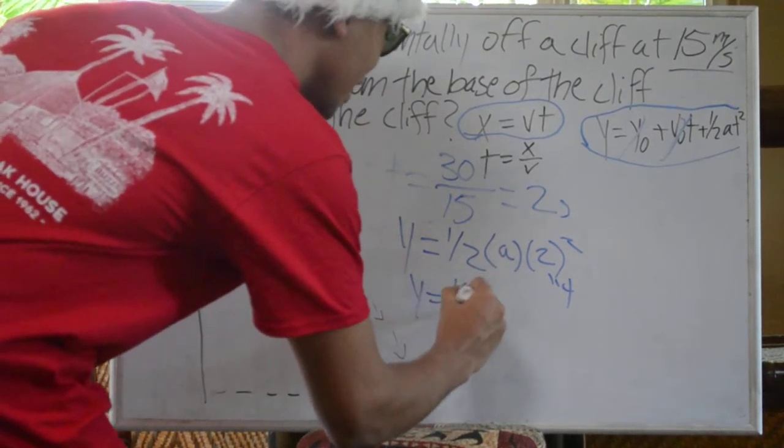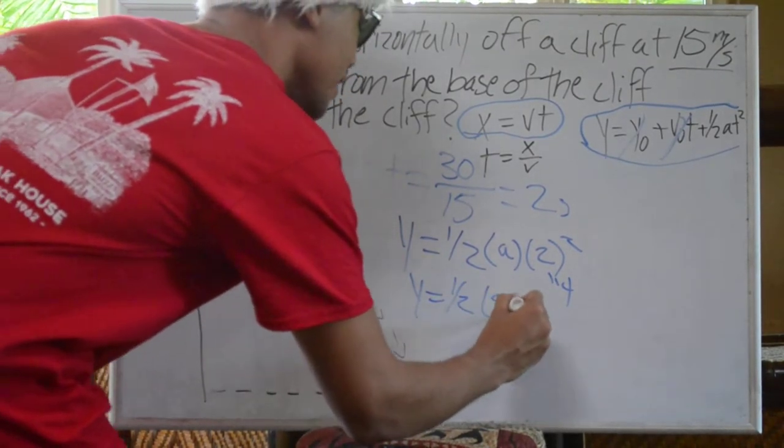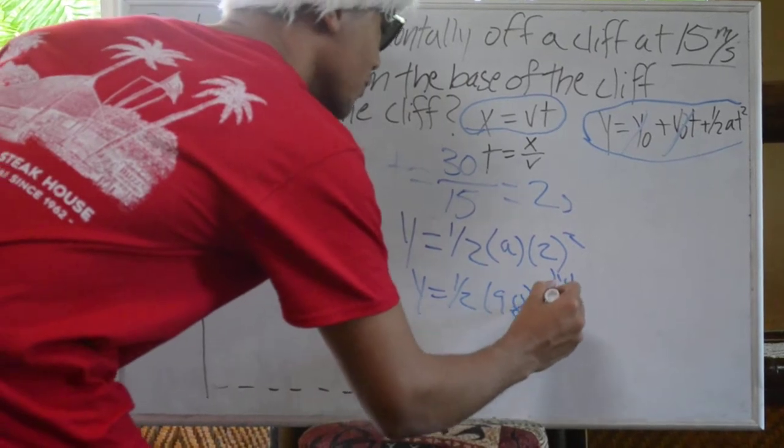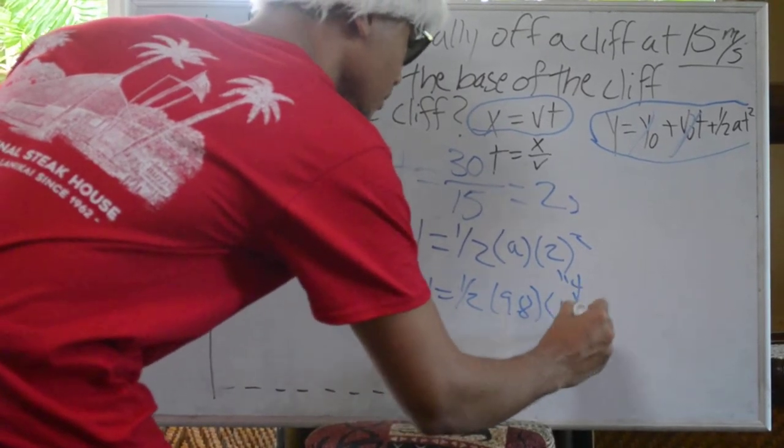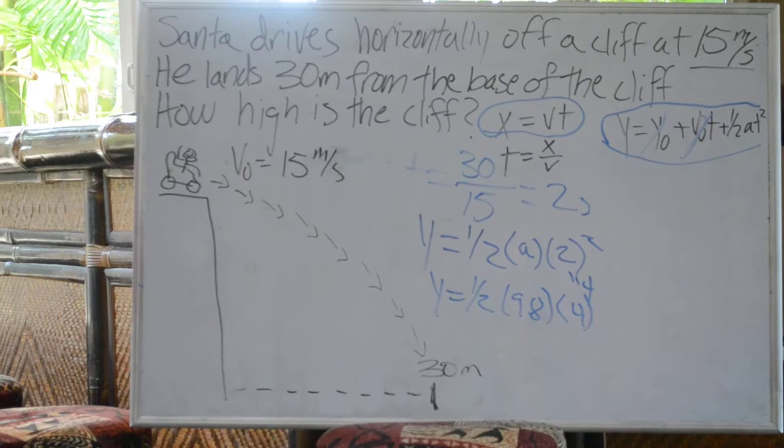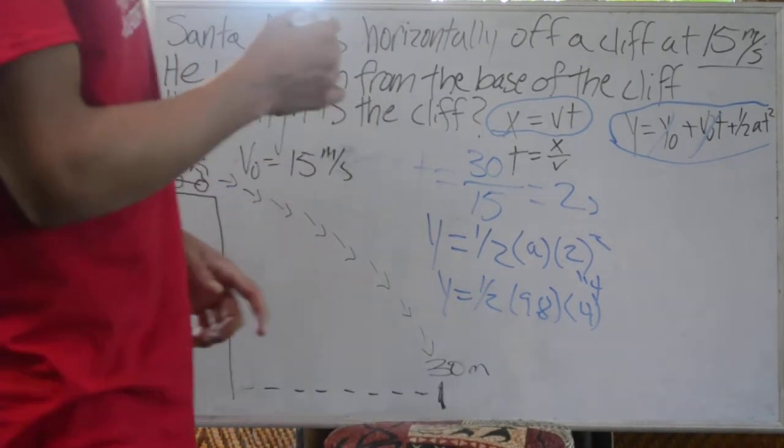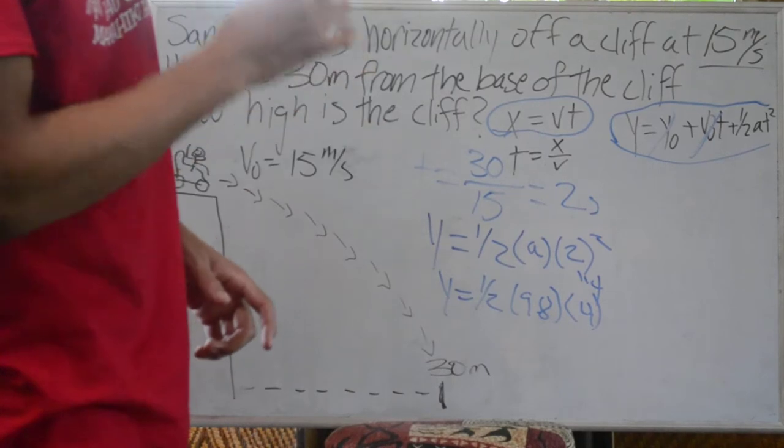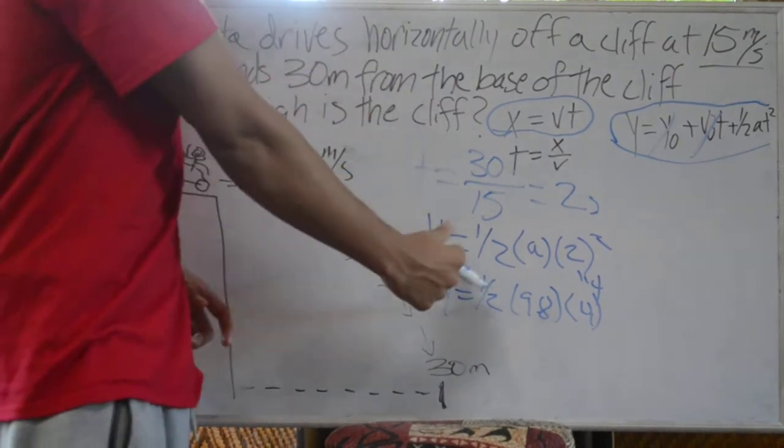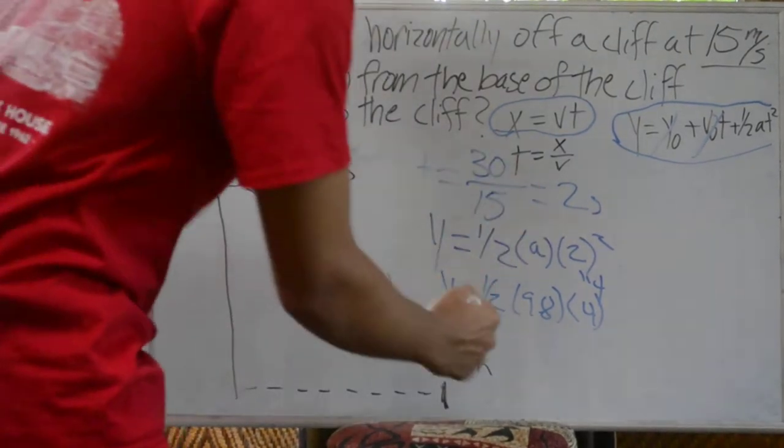y equals one-half, 9.8 times 4. With simple calculations, we can multiply 4 times 9.8, we'll get somewhere around 40. We can take half of that. y equals 20.